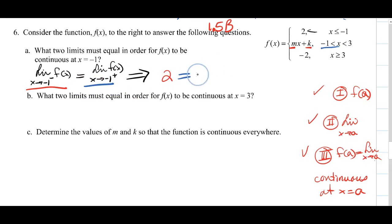So 2 must equal my right limit mx plus k, where x is approaching negative 1, so we plug in negative 1. That gives us our first equation.